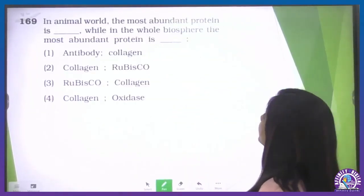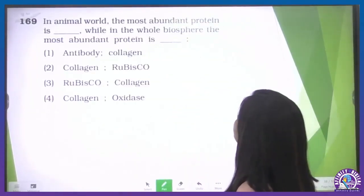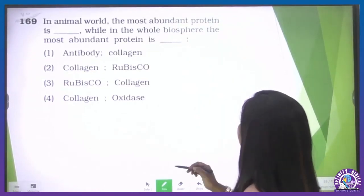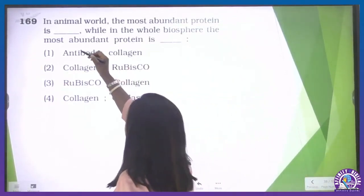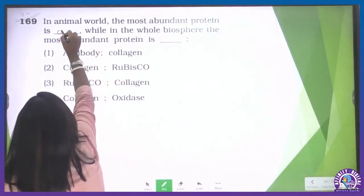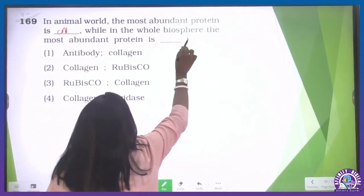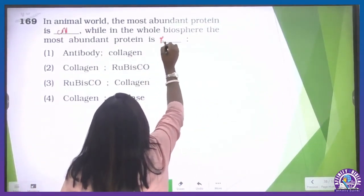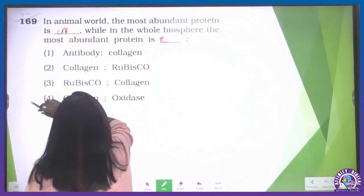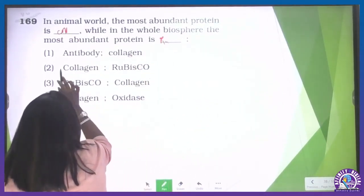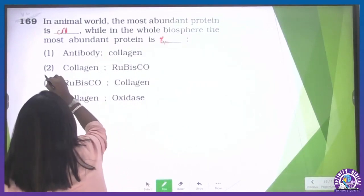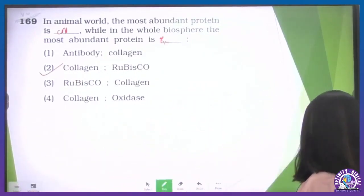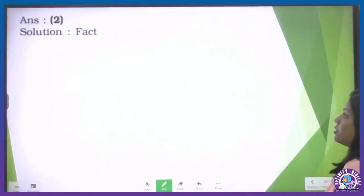In the animal world, the most abundant protein is collagen. While in the whole biosphere, the most abundant protein is Rubisco. So it will be collagen and Rubisco — the second option.